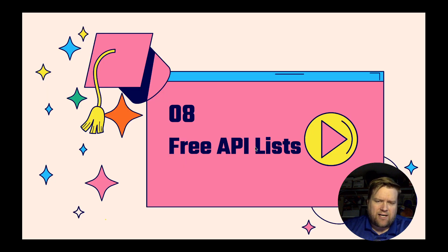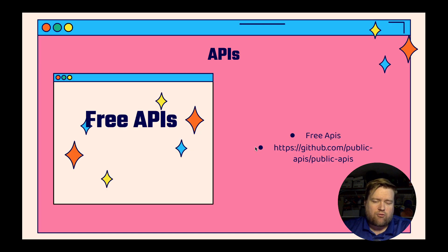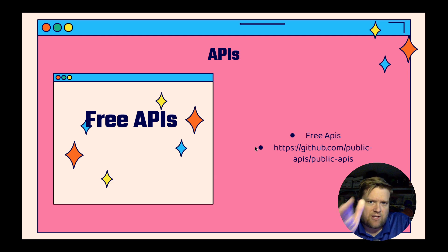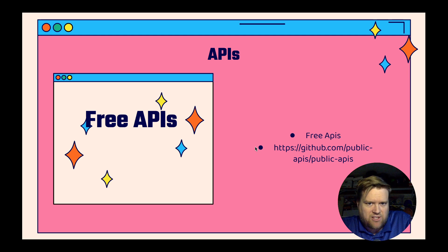I mentioned a lot of these different APIs and I know some of them cost money and some are free. If you want a really large list of free APIs, you can go to the GitHub repository public-apis/public-apis — it literally has hundreds of free APIs you can use to just test stuff out. So if you just want to play around with different APIs and different projects, check out that list.